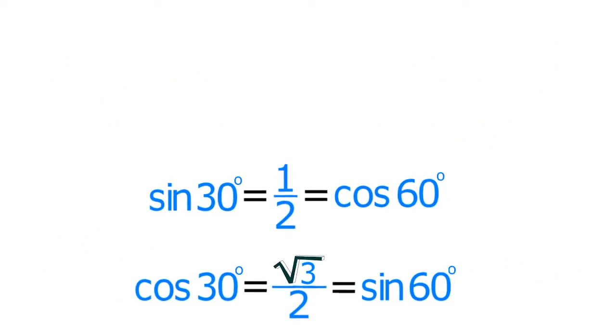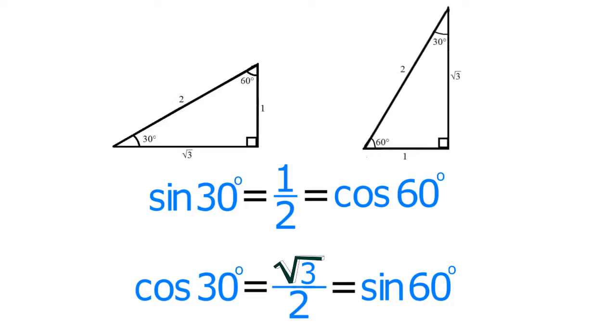This connection between these values makes sense because the 30 degree angle and the 60 degree angle are both found in the 30-60-90 triangle.